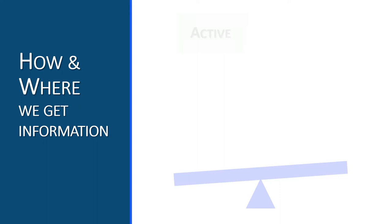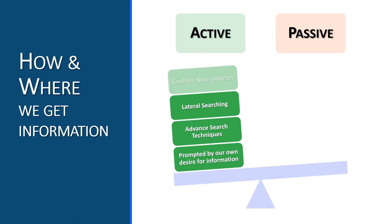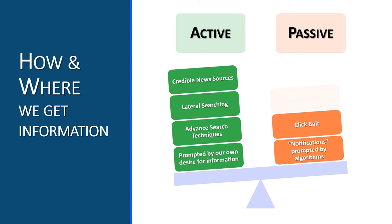With that in mind, we need to consider how and where we are getting our information. Are we actively looking for information to better inform ourselves, or are we passively relying on notifications prompted by complex algorithms to tell us what it thinks is important? Are we using advanced search techniques and searching laterally to confirm information? Or are we falling prey to clickbait and wandering down a veritable rabbit hole that will only feed more of the same?